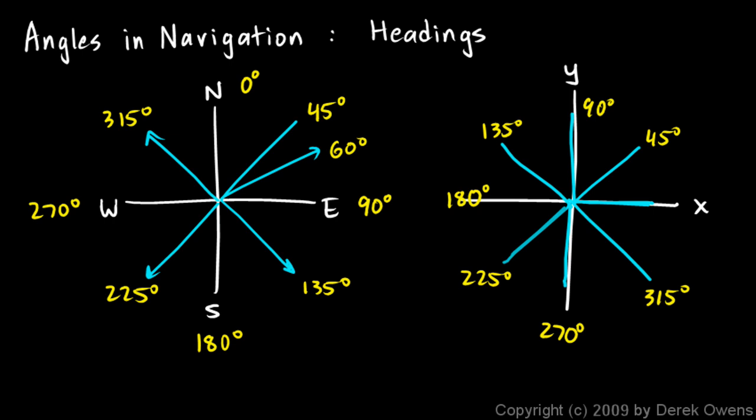So navigators, the whole point here is that navigators specify angles starting at north and going clockwise, and mathematicians specify angles starting at the x-axis and going counterclockwise. The way a navigator does it is often called a heading. The way a mathematician does it is often called a standard angle, or sometimes called a mathematical angle, but the term standard angle is often used.